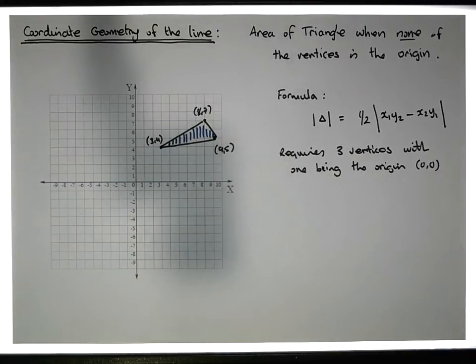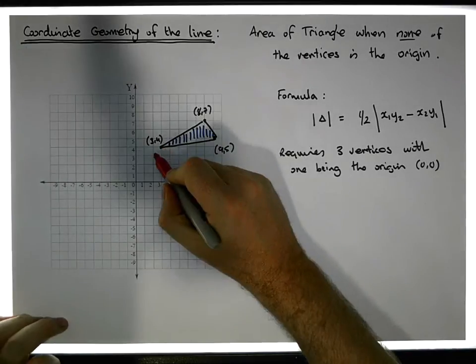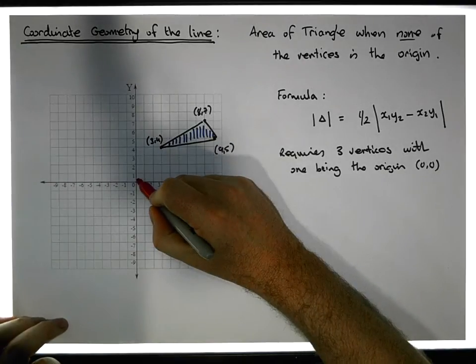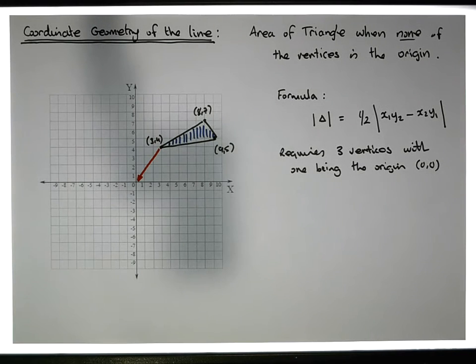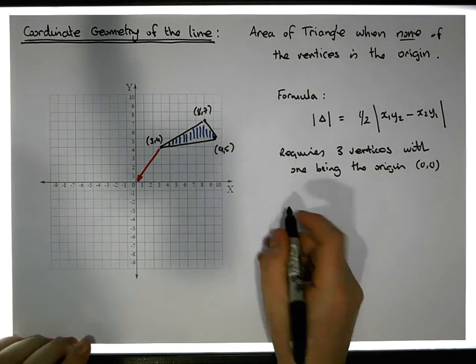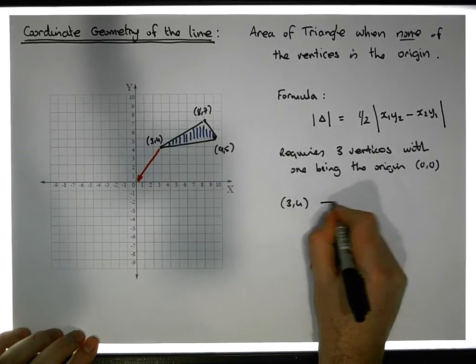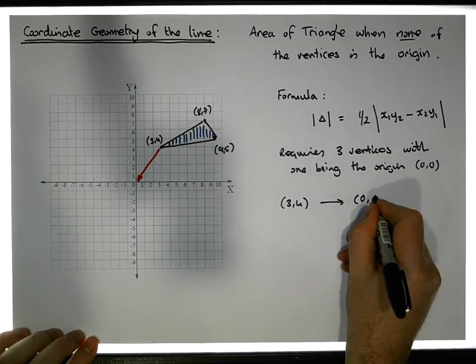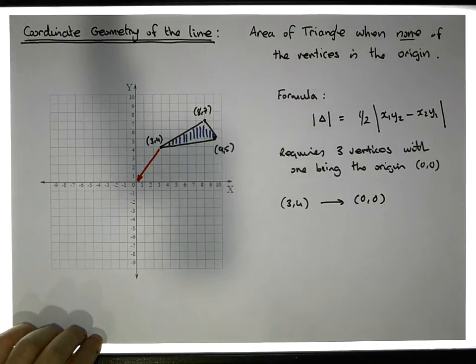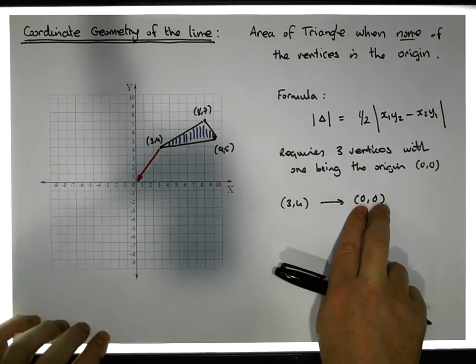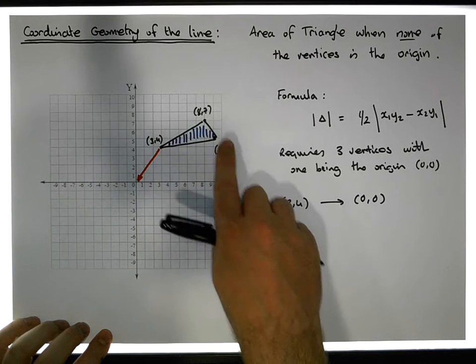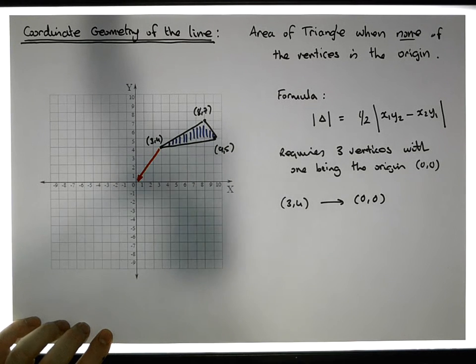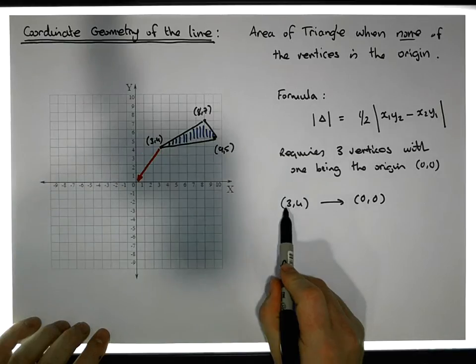We'll take the point (3,4) and transform it down to the origin (0,0). How do I get (3,4) to the origin? And whatever I do to the point (3,4) to move it to the origin, I'll do the exact same operations on the point (8,7) and on the point (9,5) to move them to new positions.